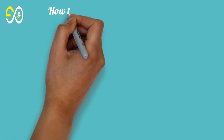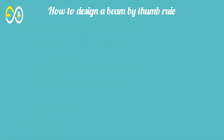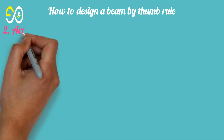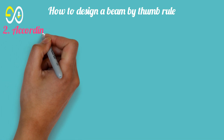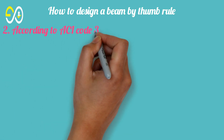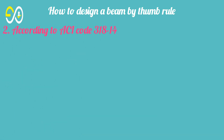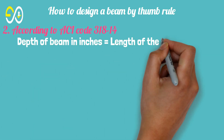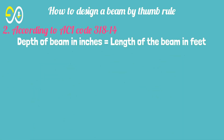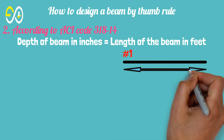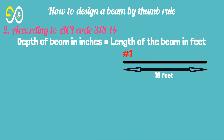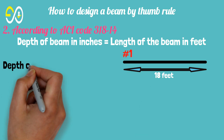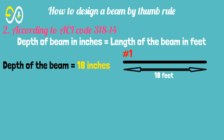How to design a beam by thumb rule using ACI code 318-14: the depth of the beam in inches equals the length of the beam in feet. Example 1: If the length of the beam is 18 feet, then the minimum depth of the beam should be 18 inches.